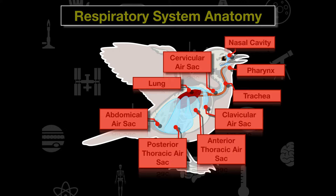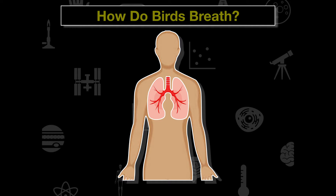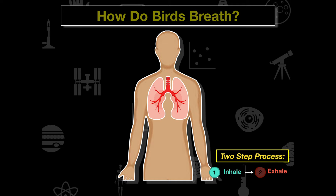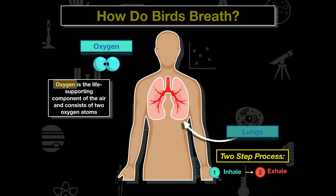To understand how birds breathe, we first need to understand how we breathe. We breathe via a two-step process: we inhale and then exhale waste gases. When we inhale, we use our lungs and diaphragm to intake oxygen — a life-supporting component of air consisting of two oxygen atoms. The oxygen fills up our lungs.